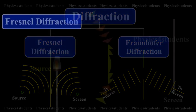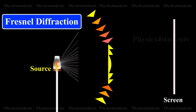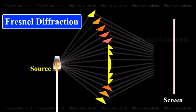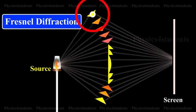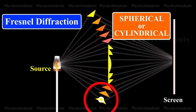In the Fresnel diffraction, the source and the screen are at finite distances from the obstacle producing diffraction. In such a case, the wavefront undergoing diffraction is either spherical or cylindrical.